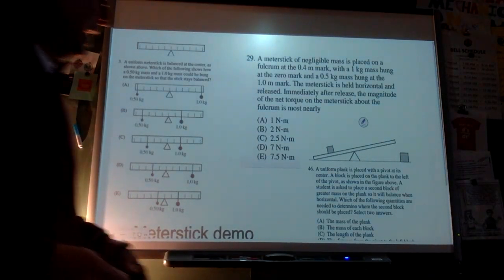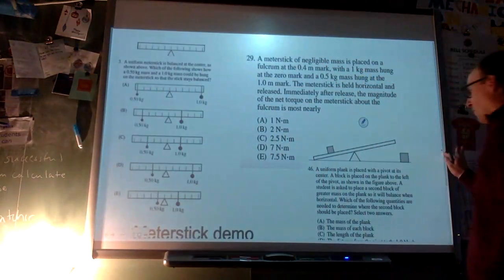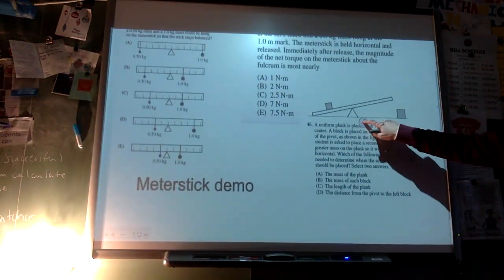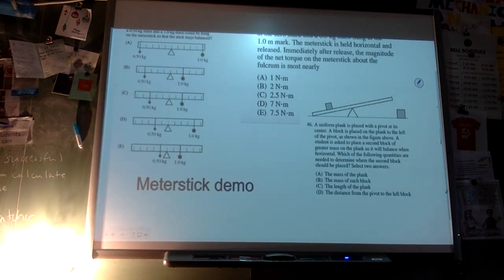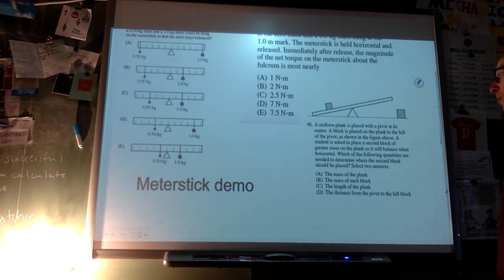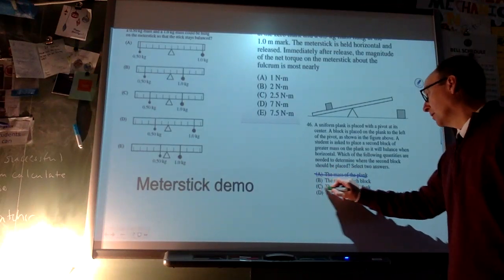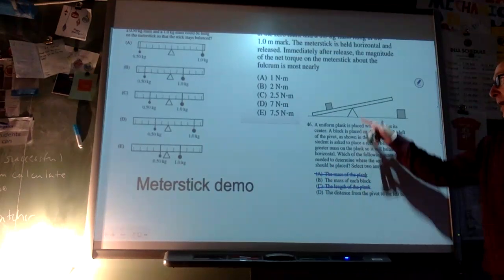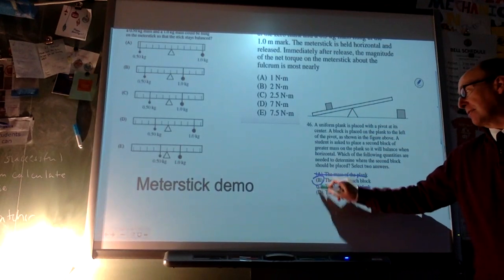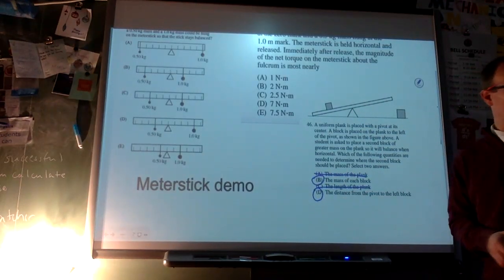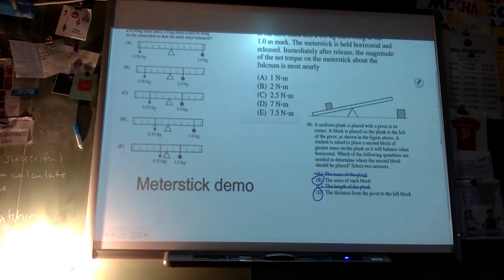Problem 46: a uniform plank with a pivot at its center has a block placed to the left of the pivot. A second block of greater mass is to be placed so the plank stays horizontal. We don't need to know anything about the plank because all its weight acts at the pivot. We need the mass of each block and the distance from the pivot.